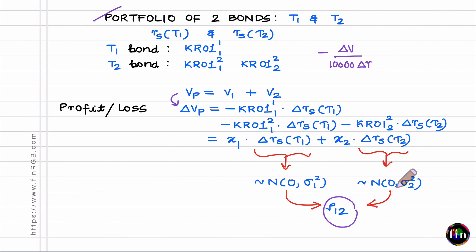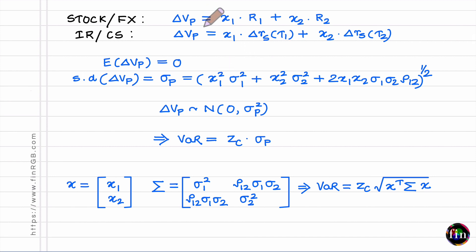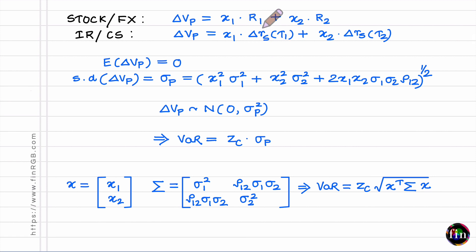Regardless of whether risk factors come from camp one or camp two, we have shown that the PnL of our position can be written as a sum over all risk factors of a quantity (exposure) times a change variable. This unified structure holds in both cases.